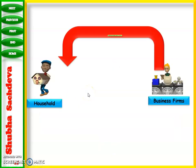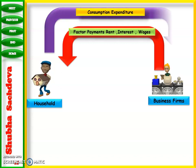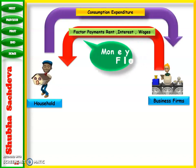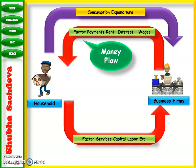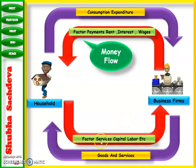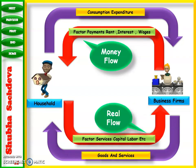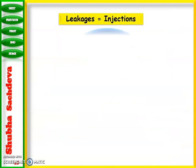Business firms make factor payments — rent, interest, wages — to households in exchange for factor services such as land, labor, capital, and enterprise. The households then make consumption expenditure back to the firm when they purchase goods and services. This is money flow. So, this gives us our two-sector model and our real flow.